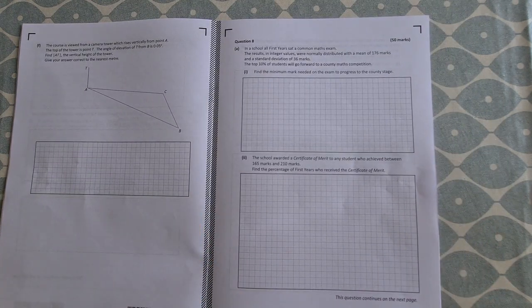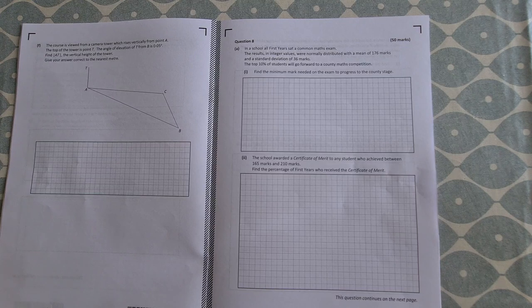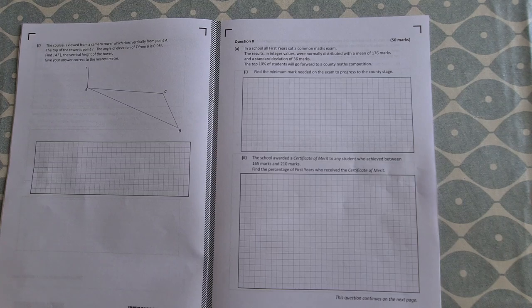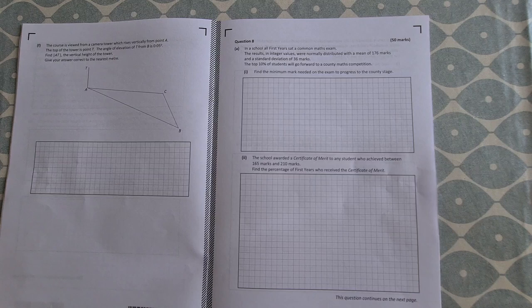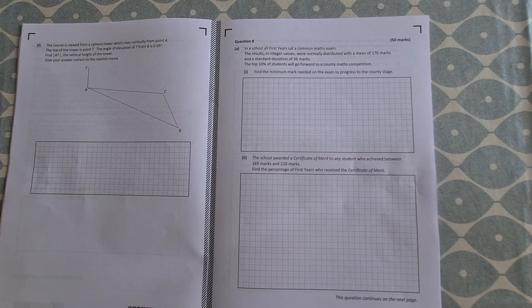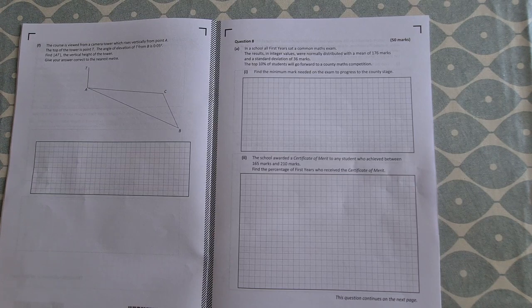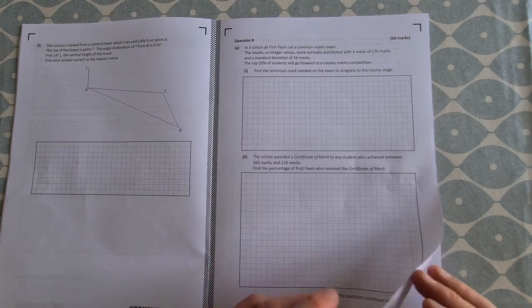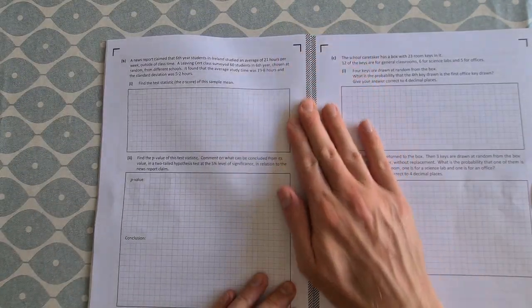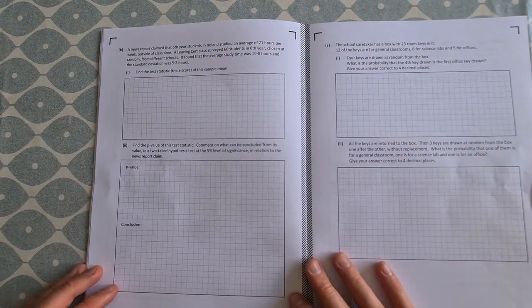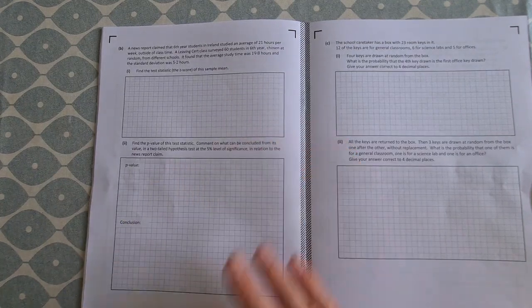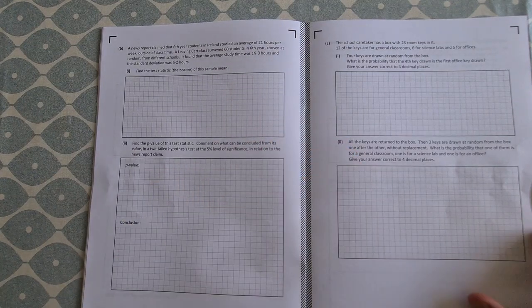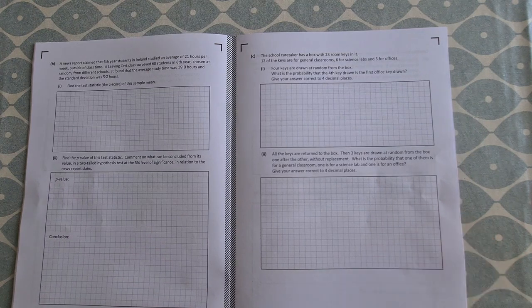Question 8 then. We have some statistics here. Results of a maths exam. We are given a mean of 176 marks. We're asked about the top 10% of students, and we're asked to find the minimum mark for the top 10% of students. So a nice statistics question there. Let's see, there's a good bit in this actually. Find the Z score, so that should be all right. Find the P value. You've already found the Z score, so you're just moving on there. And then Part C is something different.